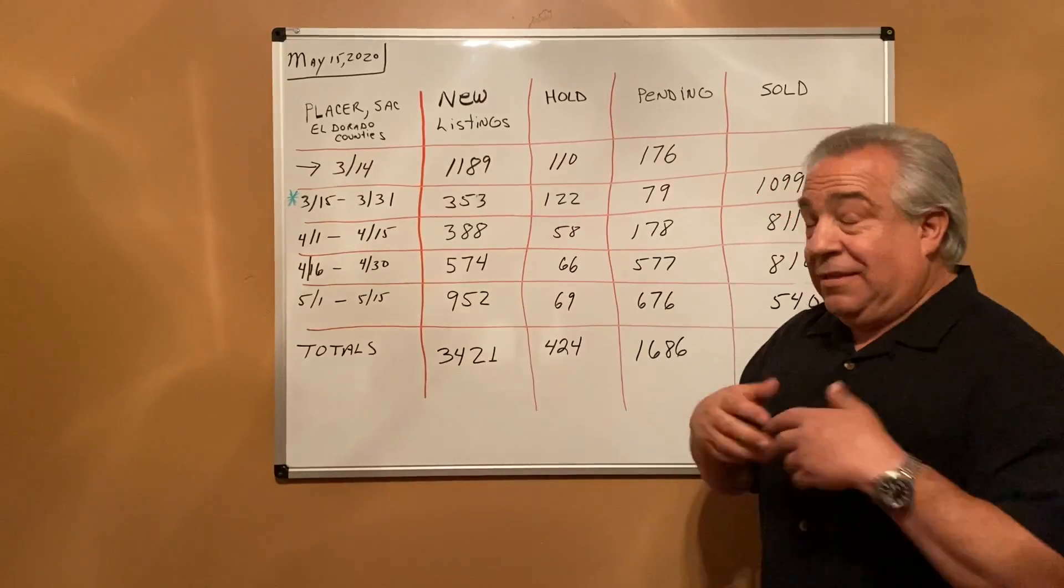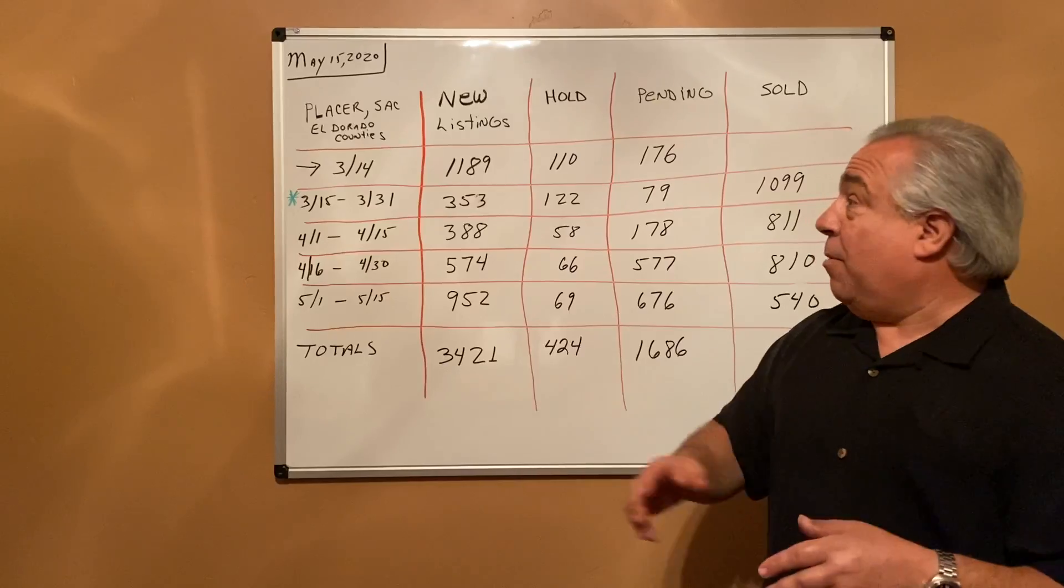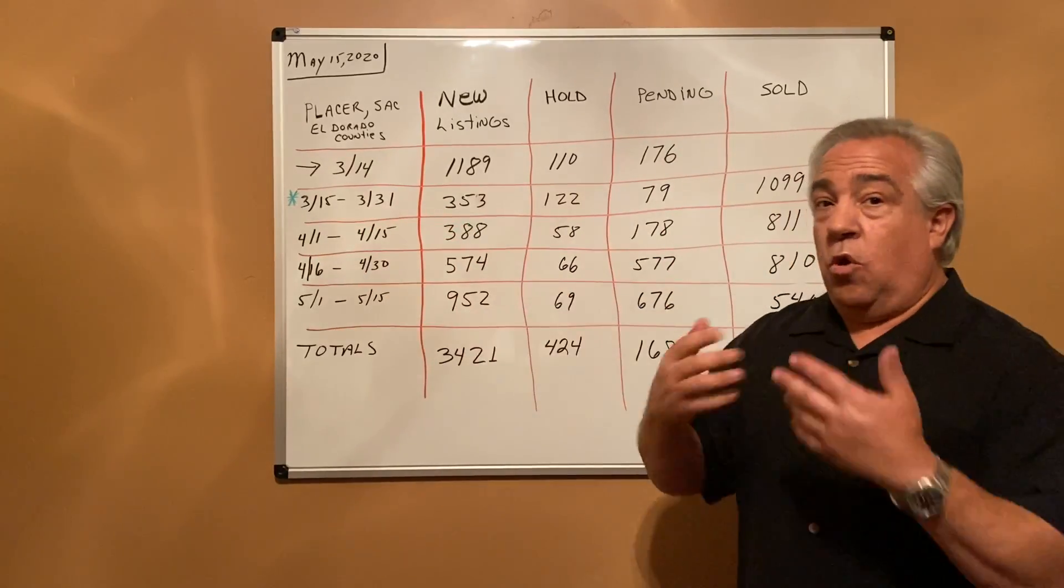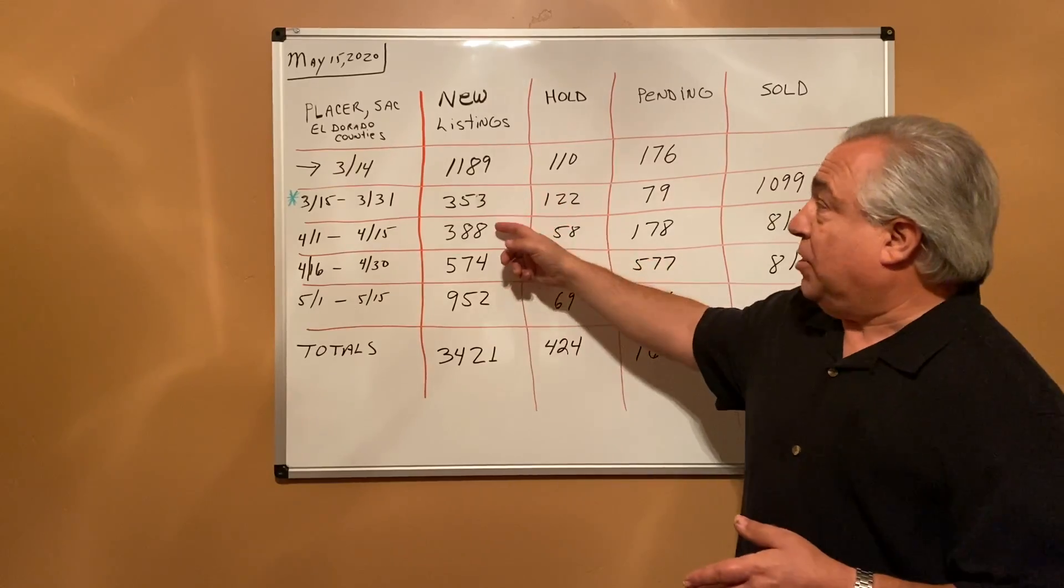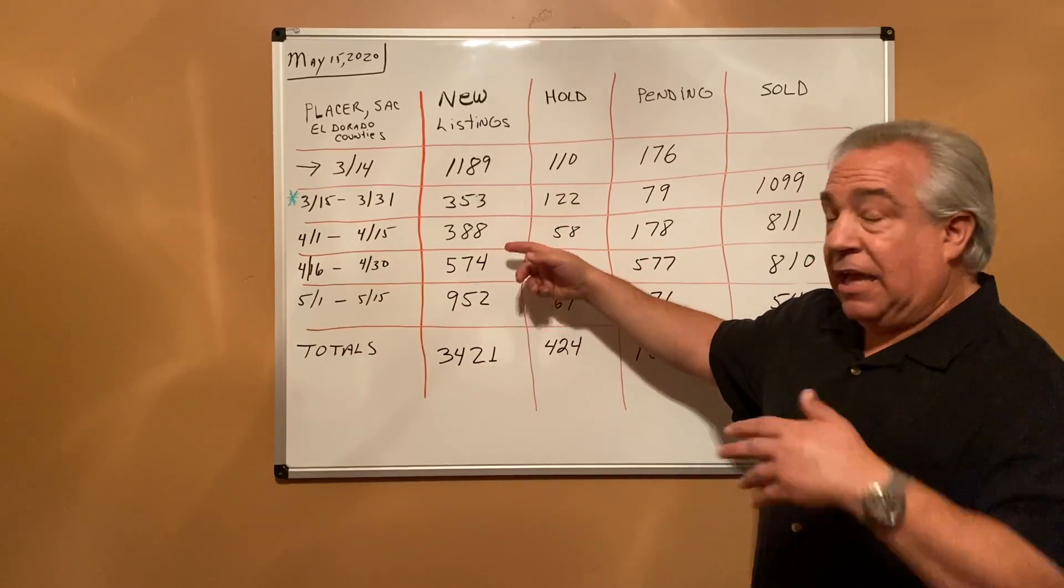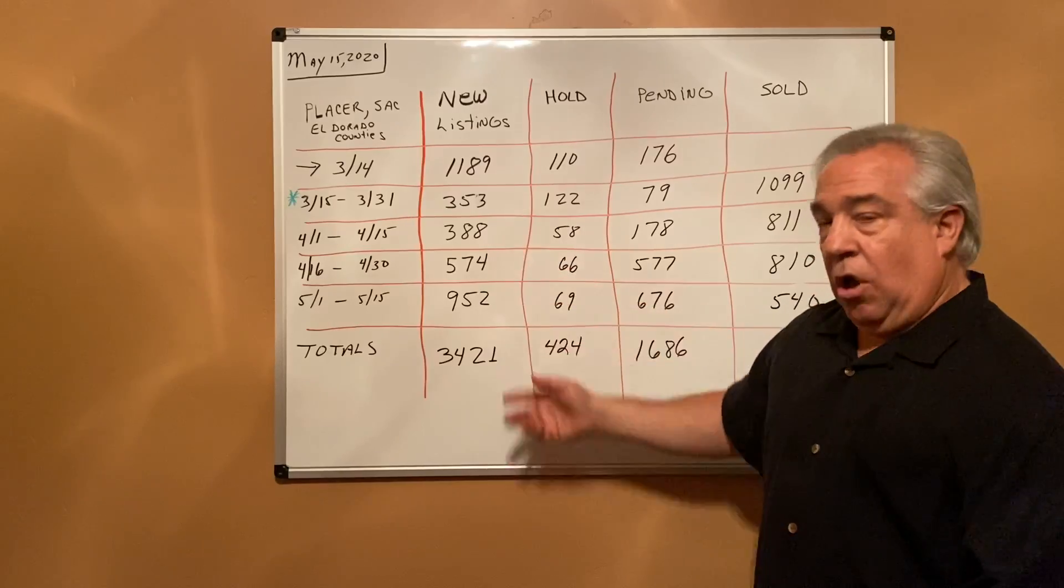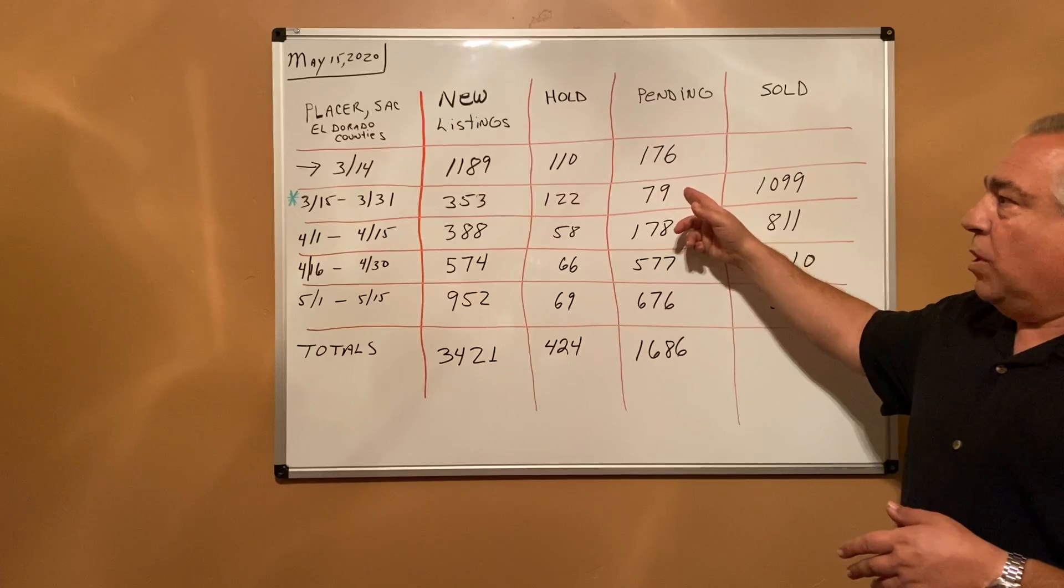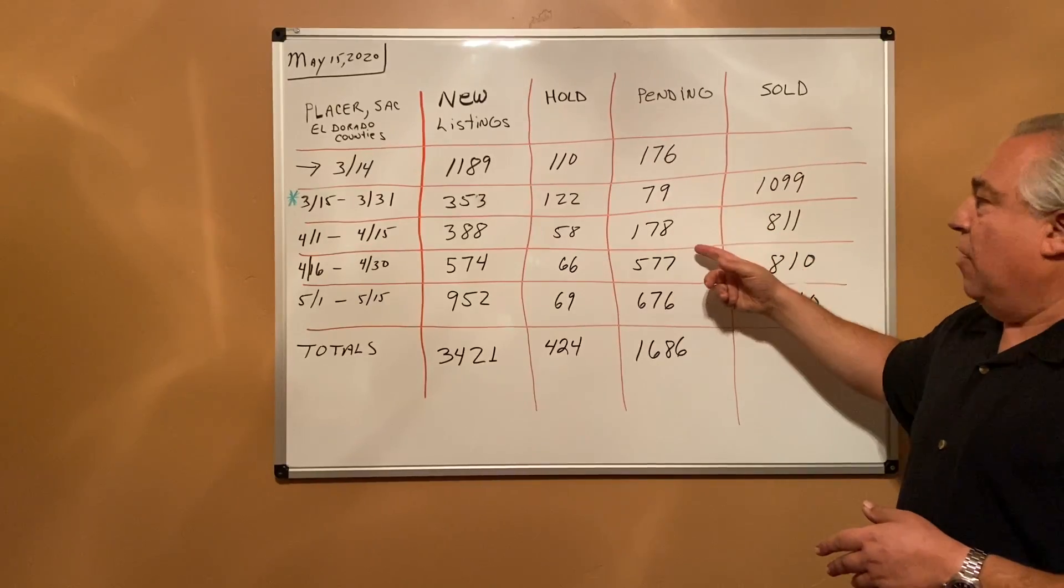We definitely did see a change in the market when that stay-at-home order went into place. New homes coming on the market dropped significantly. However, in the last 30 days it's going back up. Same thing with homes going under contract—when the stay-at-home order went in place it dropped, and now in the last 30 days I've seen those numbers and contracts coming back up.